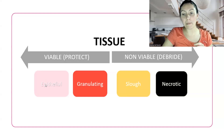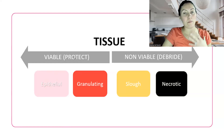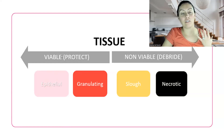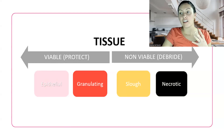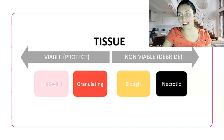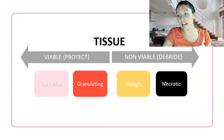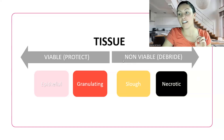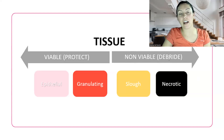So epithelial tissue — viable, we protect it. Granulation tissue — viable, we protect it. Slough — non-viable tissue, we debride it. Necrotic tissue, which is different than a scab — non-viable, we debride it.